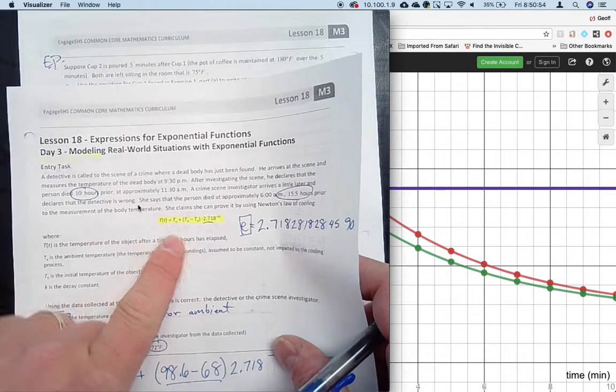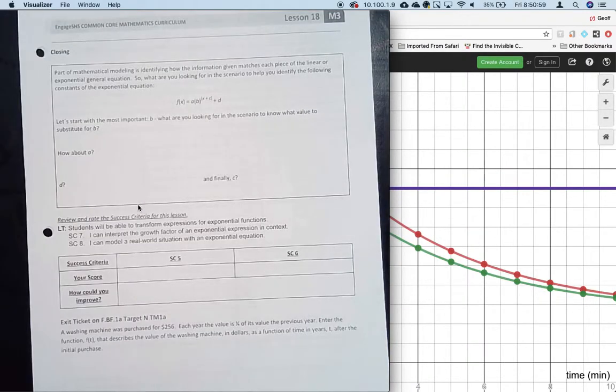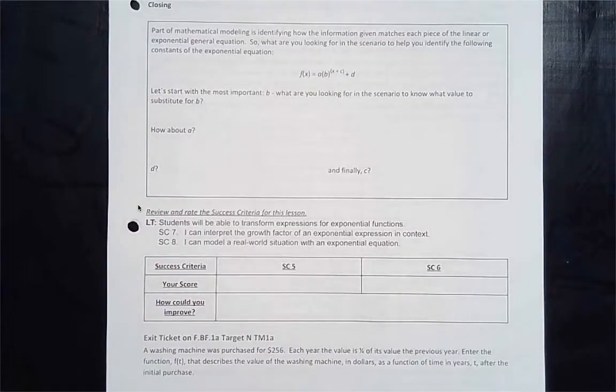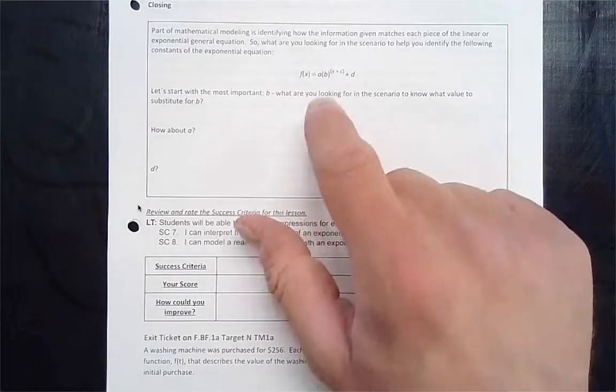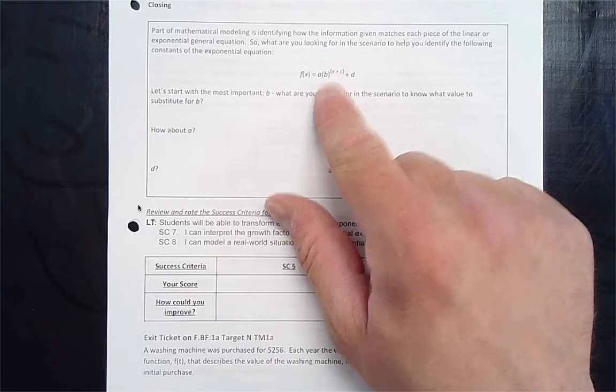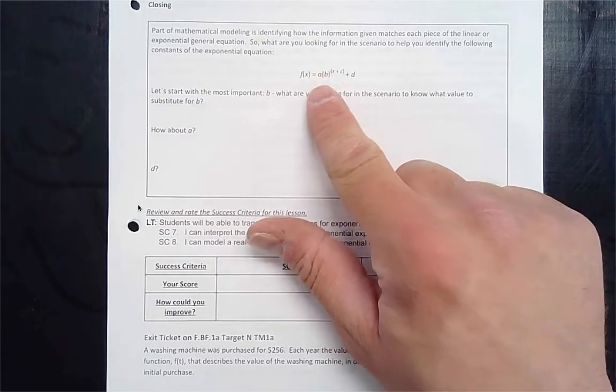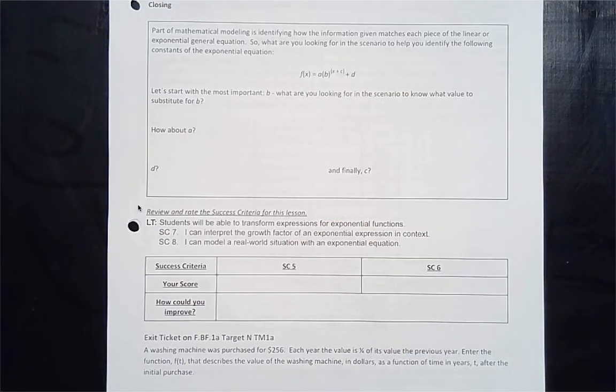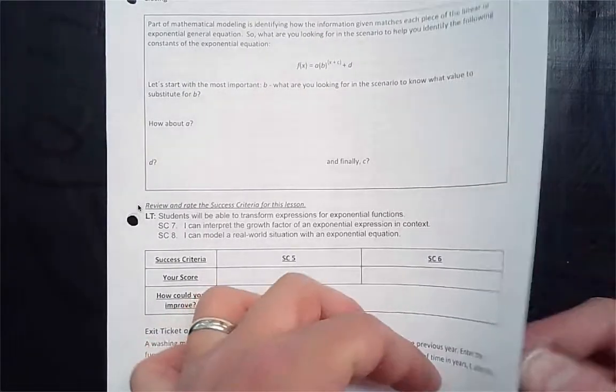Thank you Isaac Newton for giving us that equation. In closing, for Day 3, part of mathematical modeling is identifying how the information given matches each piece of the linear or exponential general equation. What does B help you find? What does A help you find? What does D help you find? And then I put C last of all because sometimes it's there, it's a shift or some sort of thing.